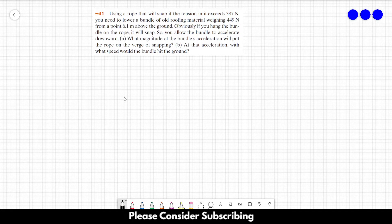Number 41, using a rope that will snap if the tension in it exceeds 387 newtons, you need to lower a bundle of old roof material weighing 449 newtons from a point 6.1 meters above the ground.